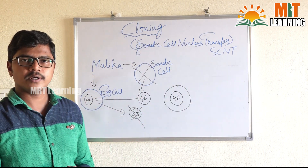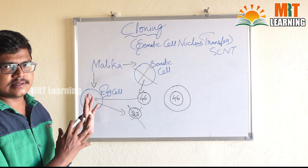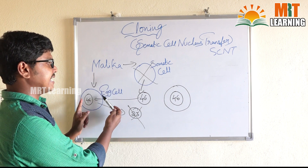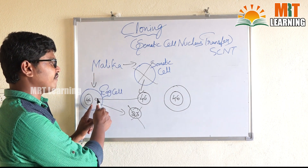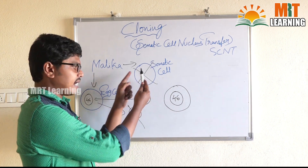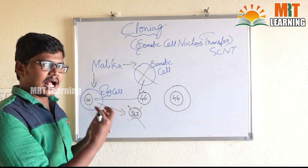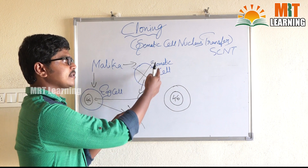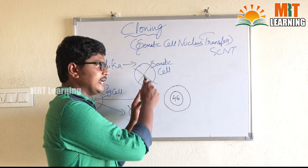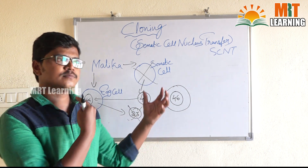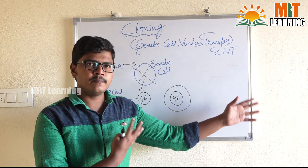To recap the cloning process: the egg needs 46 chromosomes to start reproduction. I collected both the egg and somatic cell from Malika. I took the 23-chromosome nucleus of the egg outside and the 46-chromosome nucleus of the somatic cell outside. I destroyed the egg nucleus and the somatic cell. Then I inserted the 46-chromosome somatic nucleus into the egg using an electromagnetic process. The egg now has 46 chromosomes, starts reproduction, and the final baby is a replica of Malika.